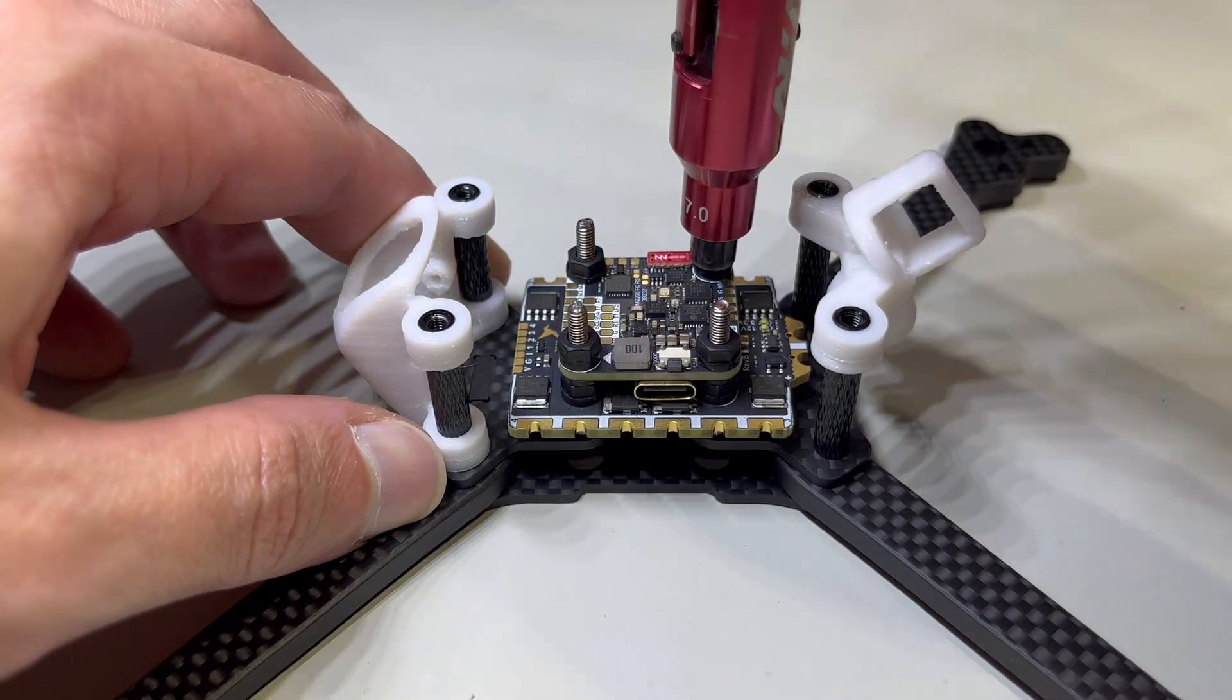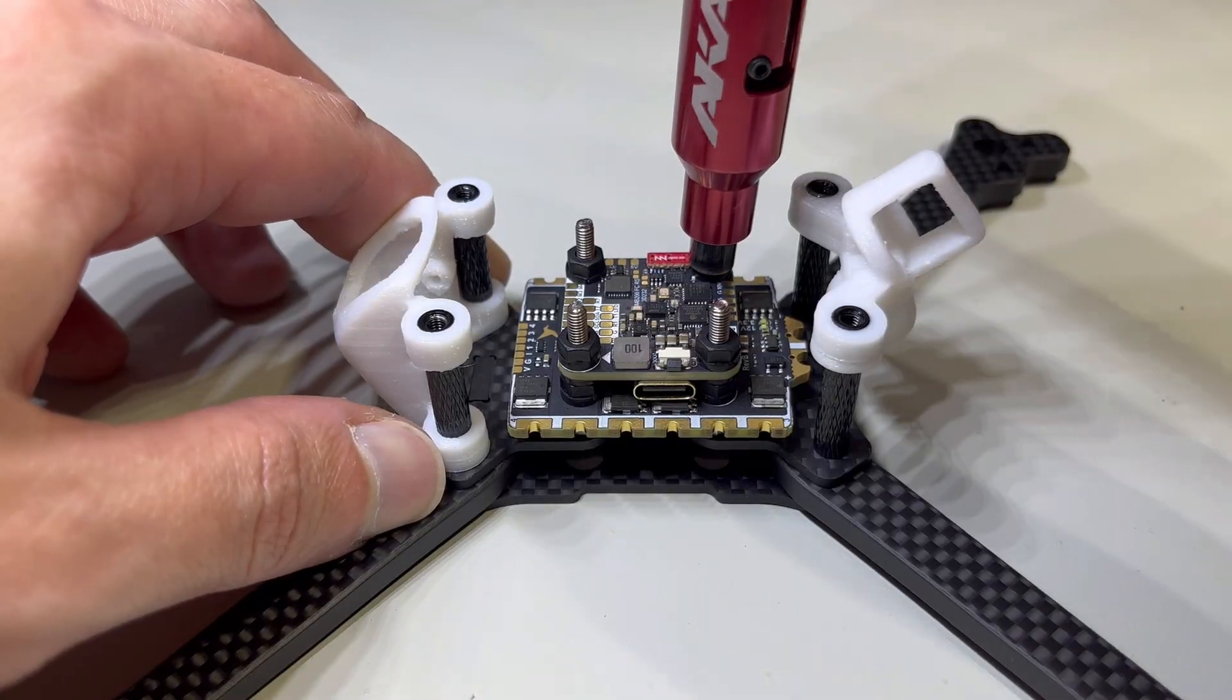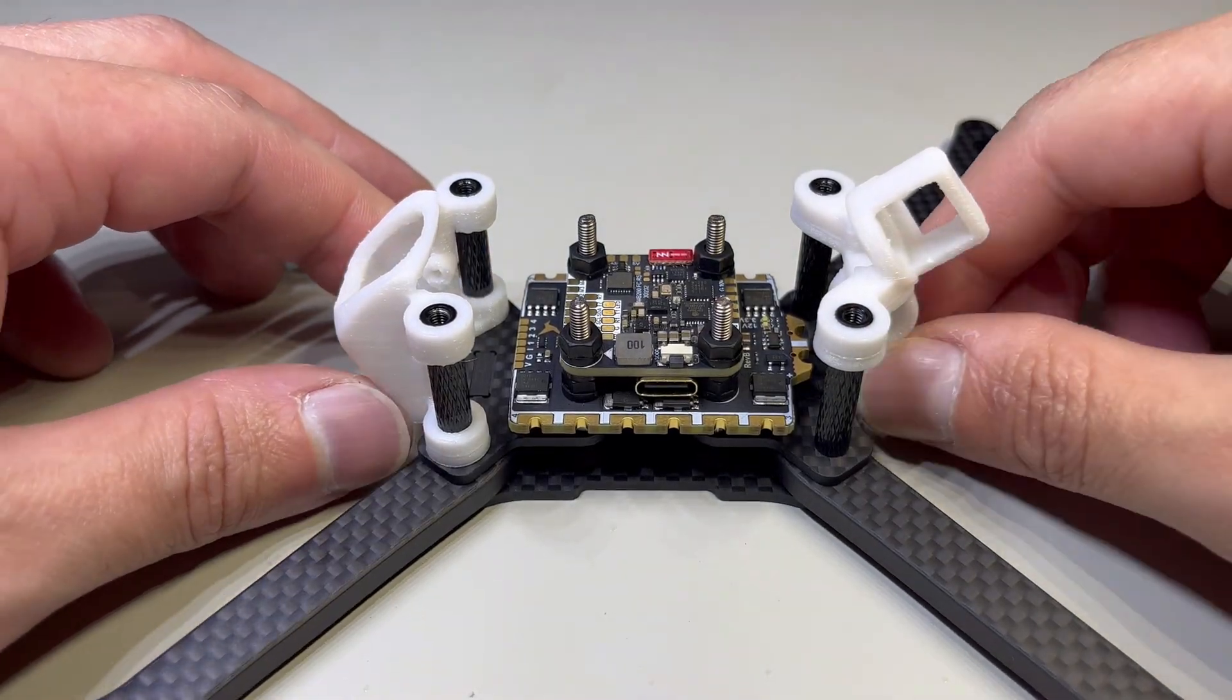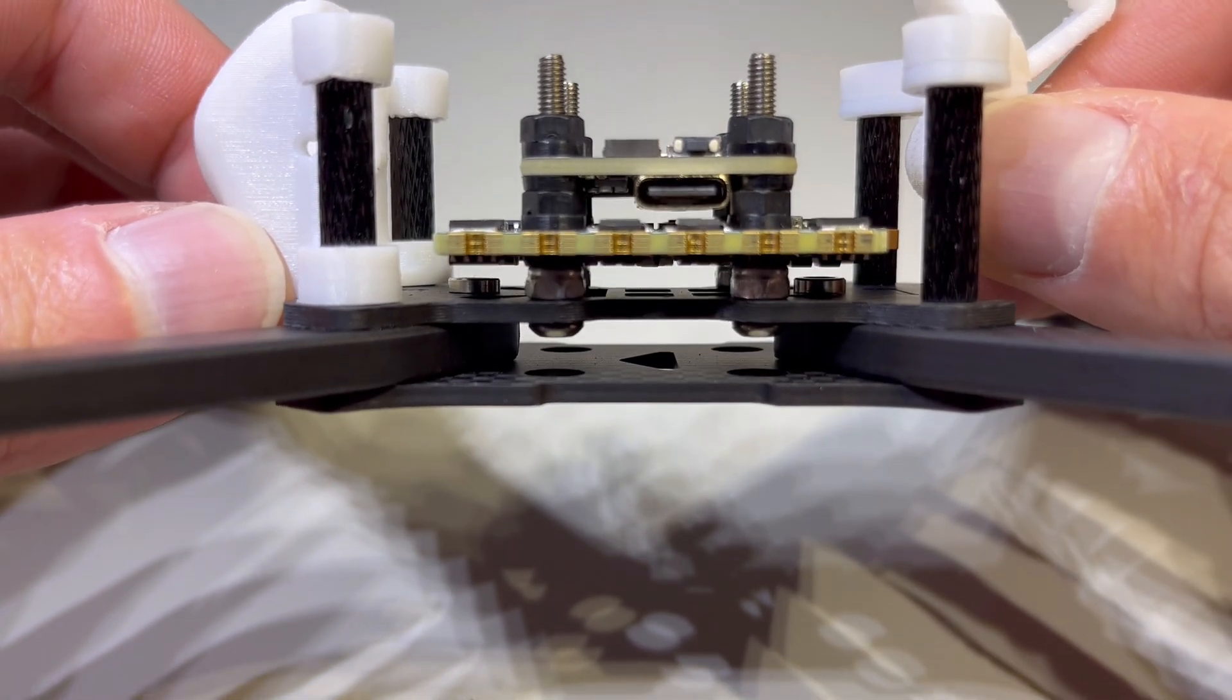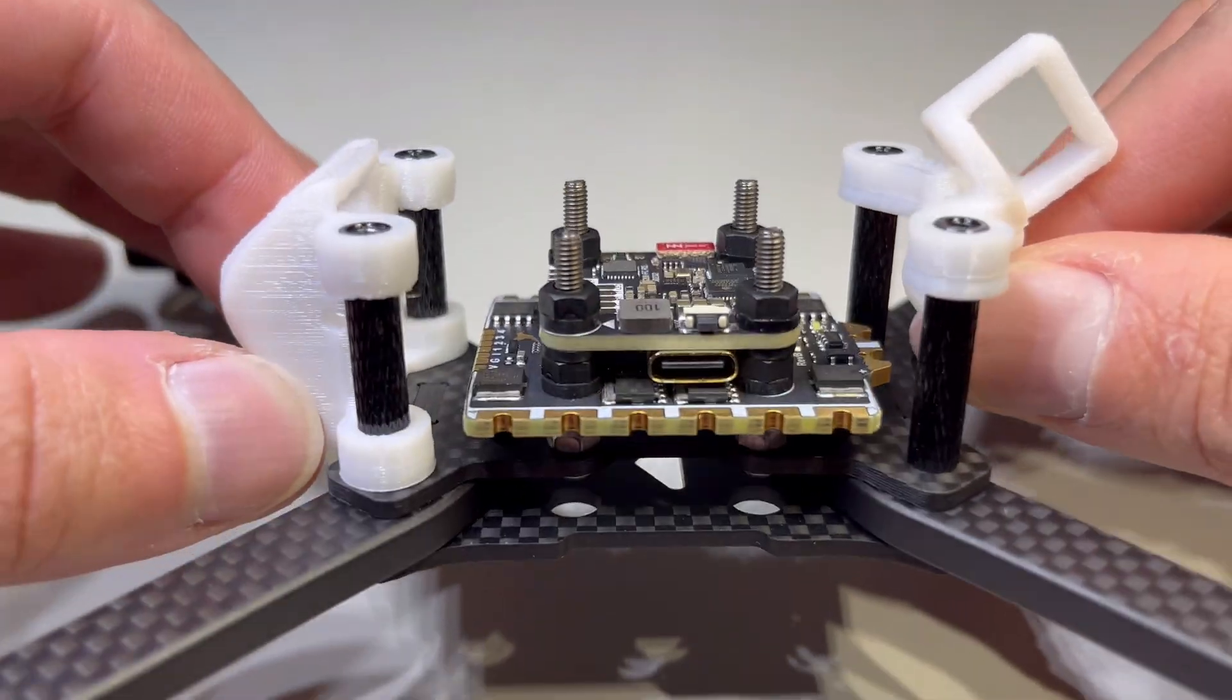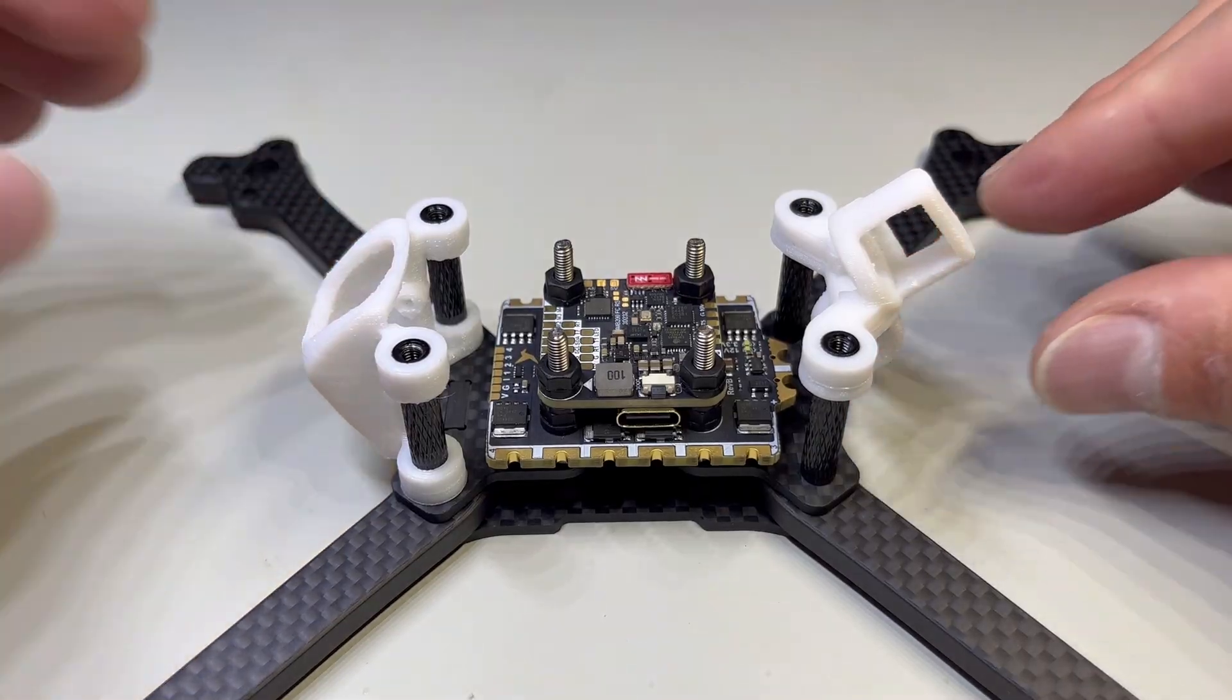So once this is done, we'll take note of the stack height once again. And this is just to ensure we have the same space between all the components, got enough space between the ESC and the flight controller and the bottom of the ESC and the frame.